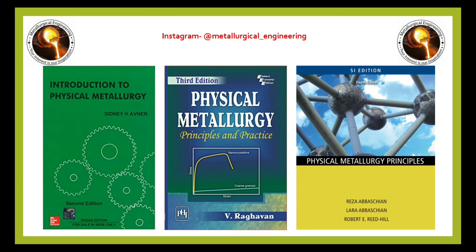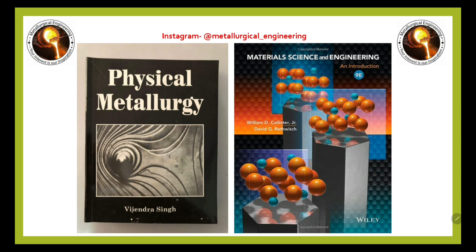Important books for Physical Metallurgy: Physical Metallurgy by V. Raghavan — for any topic in detail, refer to Physical Metallurgy Principles by Reedhill, which is a very good book. Introduction to Physical Metallurgy by Sydney H. Avner is also a good reference. Physical Metallurgy by Vijendra Singh is very famous for its easy language and detailed coverage of every topic. William D. Callister is the most common book for basic Materials Science and numerical practice.